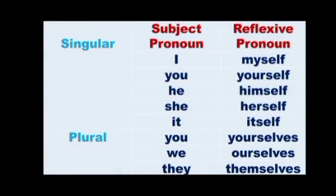Each subject pronoun such as I, we, they, you, he, she, it has its own reflexive pronoun. This table shows examples of reflexive pronouns. In singular form: subject pronoun I — reflexive pronoun myself; you — yourself; he — himself; she — herself; it — itself.